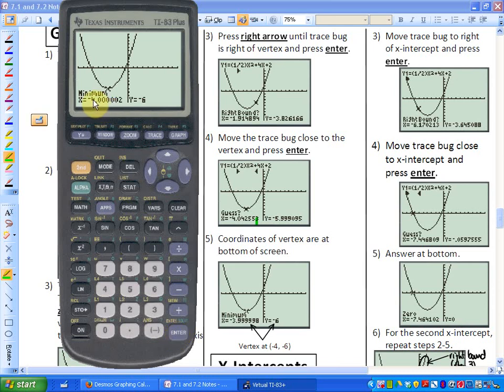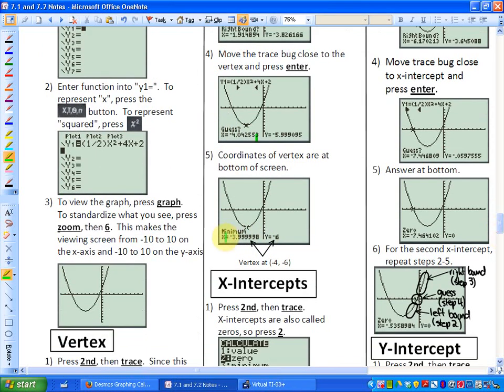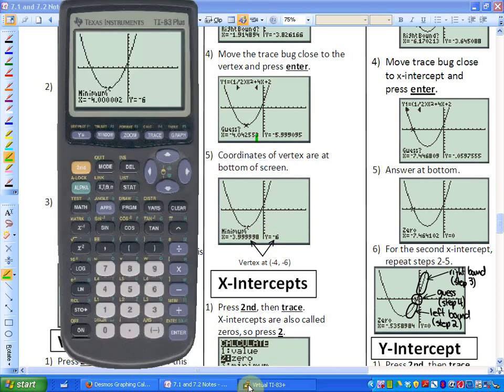And your calculator is not an exact piece of machinery, but it's somewhat close. And what we're seeing here by seeing 4.00002, that just means negative 4 and negative 6 is where your vertex is. As you can see, I've got a slightly different point down here on step 5. I have negative 3.9999998 and negative 6. So that's the same as negative 4 and negative 6. So there's your vertex.